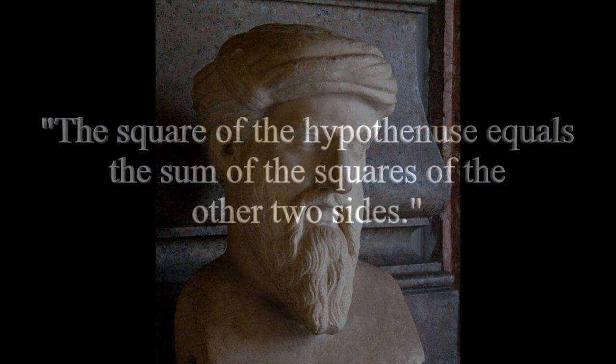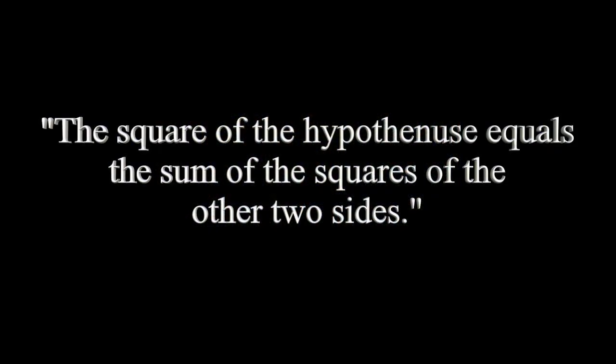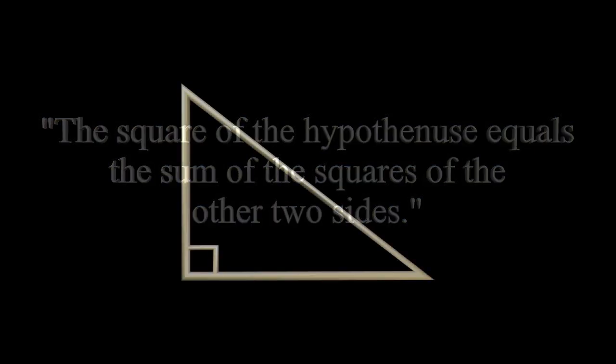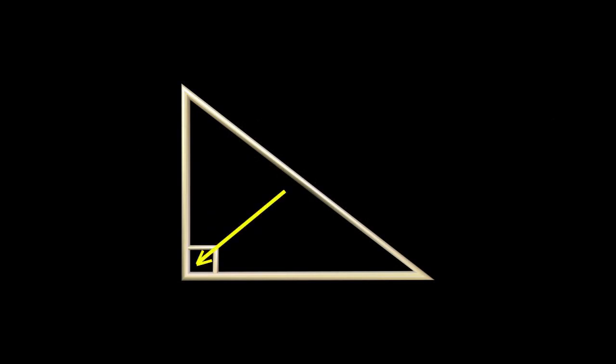The square of the hypotenuse equals the sum of the squares of the other two sides. Here's what that means. A right-angled triangle has one 90-degree angle. The side across from this right angle is called the hypotenuse. In this triangle, the letter C represents the hypotenuse, and the other two sides are represented by A and B.